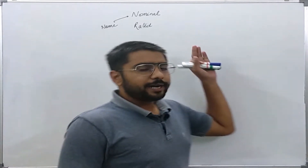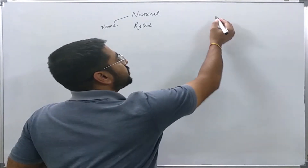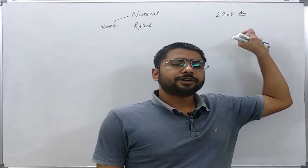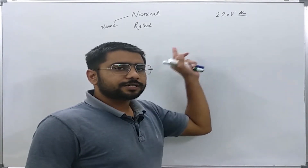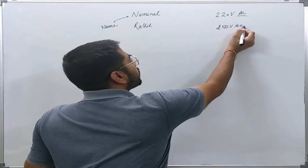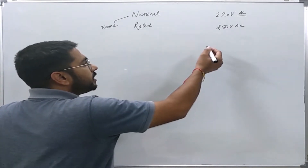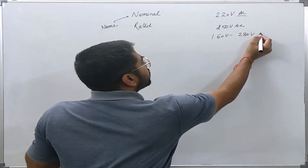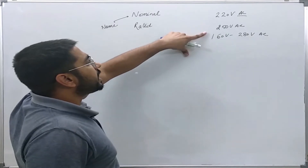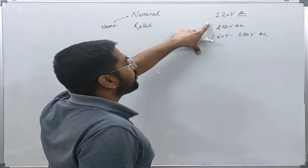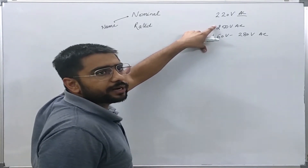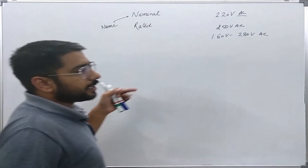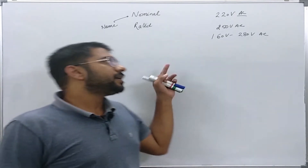What does nominal mean? For a power system, let us say I am studying a system dealing with a voltage level of 220 volt AC. For this system, 220 volt AC is the nominal voltage level. The equipment used in this system can be rated, let us say, 250 volt AC, or any inverter or AC unit used at home can be rated from 160 volt AC to 280 volt AC. So for a nominal 220 volt AC system, equipment can have different rated voltage levels, which may differ from the nominal values depending on the type of equipment and components used.